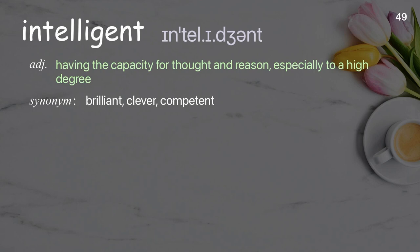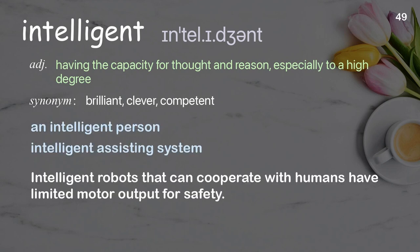Intelligent. Having the capacity for thought and reason, especially to a high degree. Examples: an intelligent person, intelligent assisting system. Intelligent robots that can cooperate with humans have limited motor output for safety.